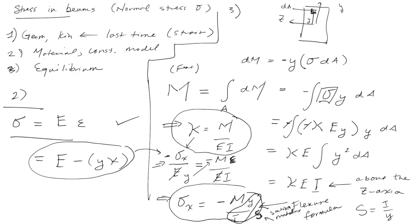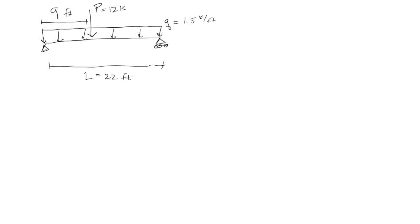Let's just do a quick example that shows what we care about here usually. If we had an example, let's say we have a simply supported beam that had a uniform distributed load, maybe some point load, p equal to 12 kips, q is 1.5 kips per foot. This is being applied 9 feet from the left, the whole length is 22 feet.